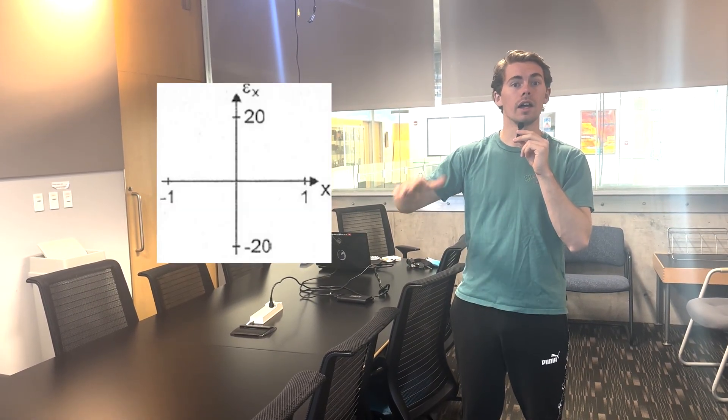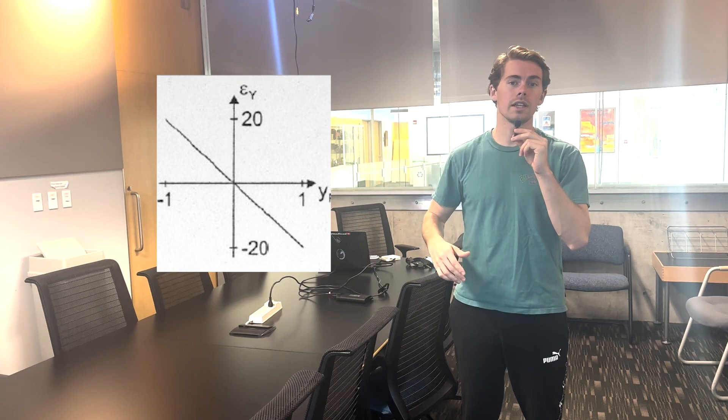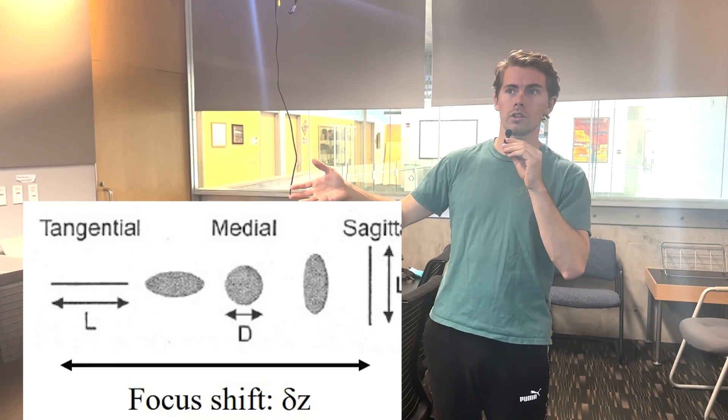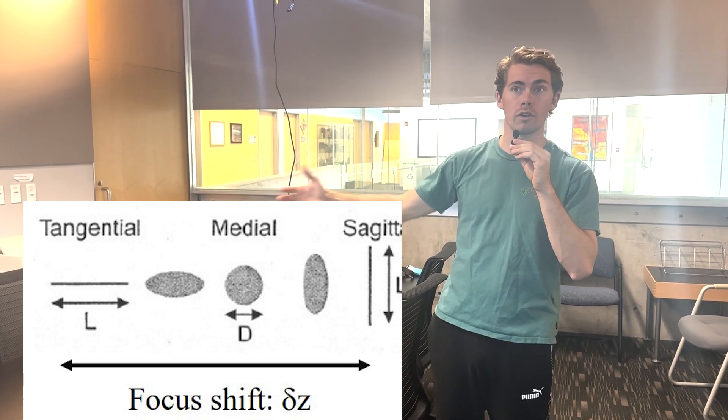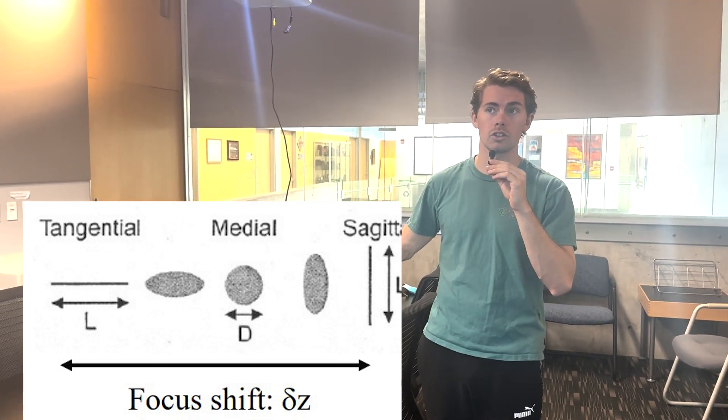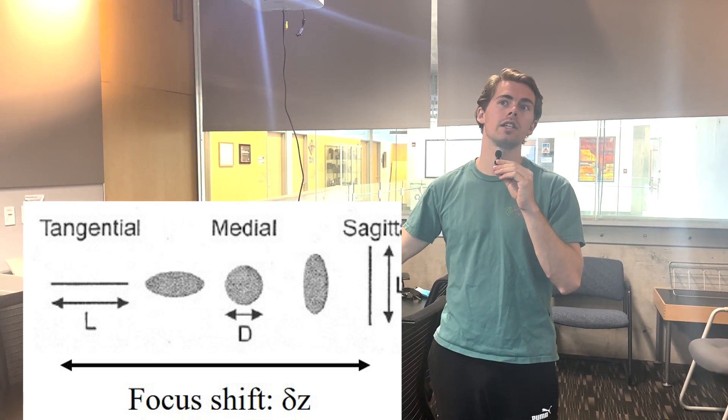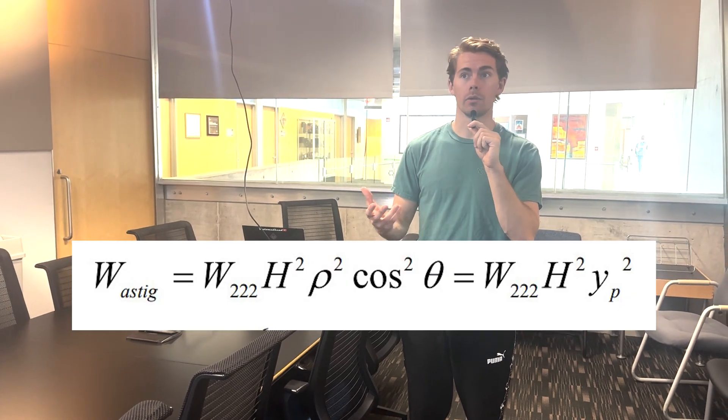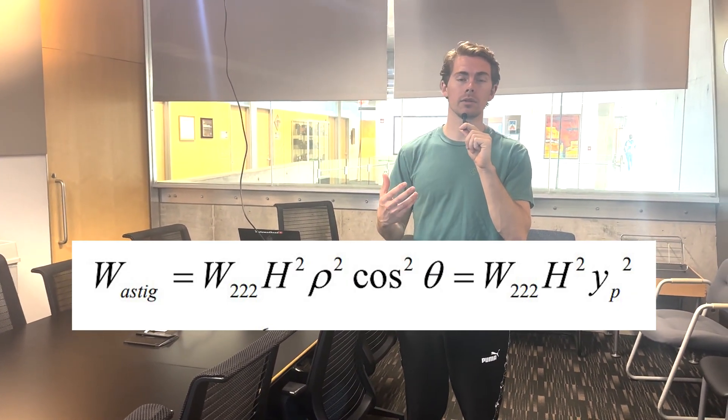This is why when we look at the ray fan plot for astigmatism, there's no astigmatism in the sagittal plane, but in the tangential plane, we can see that astigmatism decreases linearly with pupil position. This picture shows how the rays will stretch depending on the focus shift between the tangential and sagittal planes. The medial focus is typically where we want to focus our systems to balance out the tangential and sagittal astigmatism. Astigmatism varies quadratically with field, and then astigmatism will decrease linearly with pupil position.